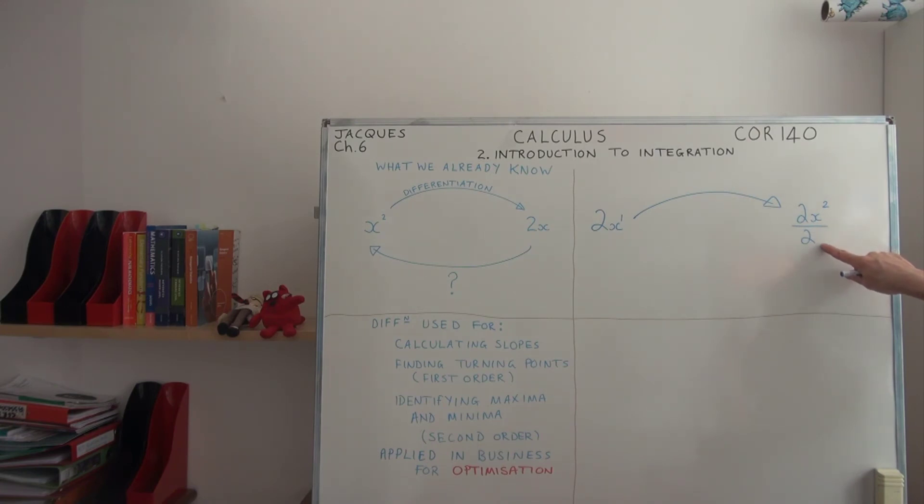Dividing through, we can take out the 2s, and sure enough we're left with the idea that 2x, when you apply the inverse operation, becomes x².